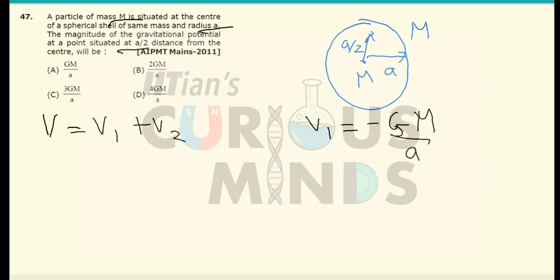This is a shell and not a solid sphere. So it will be equal to minus GM divided by A because it is situated inside this shell.